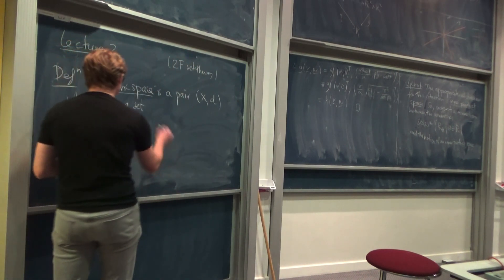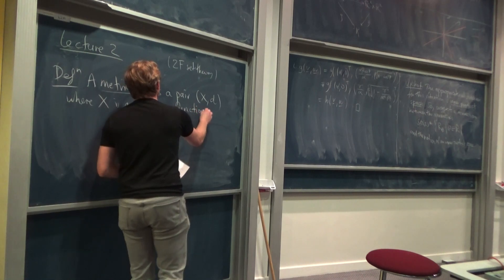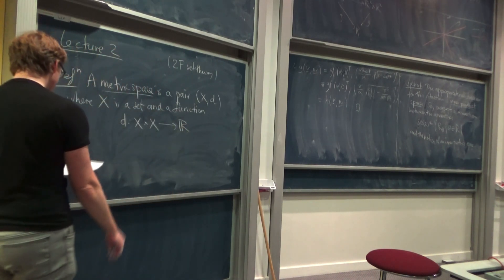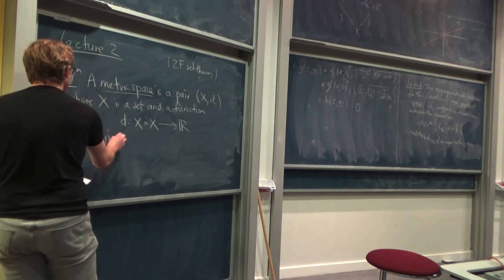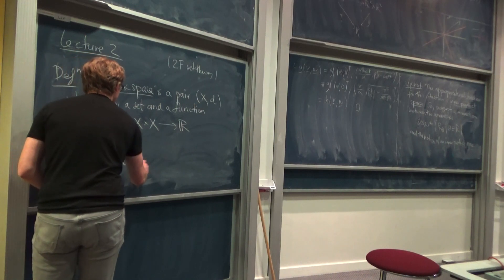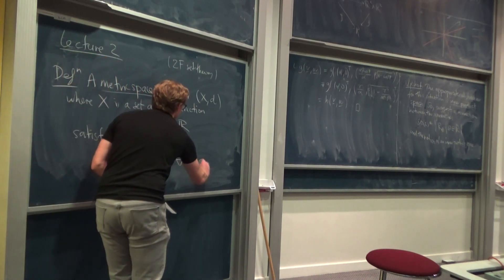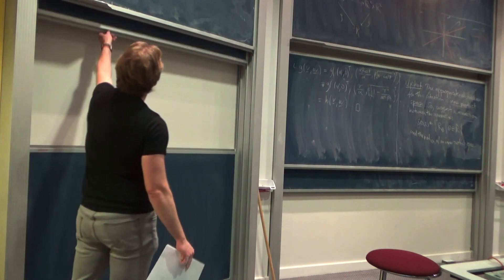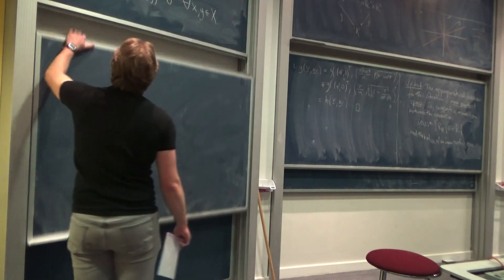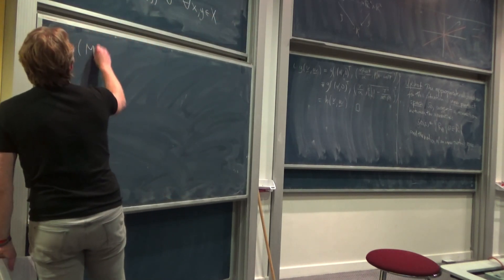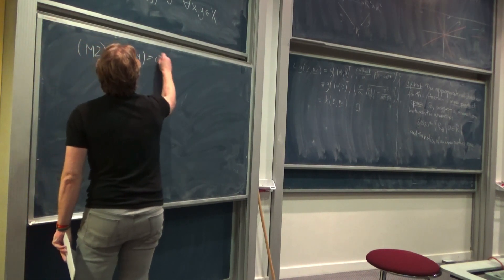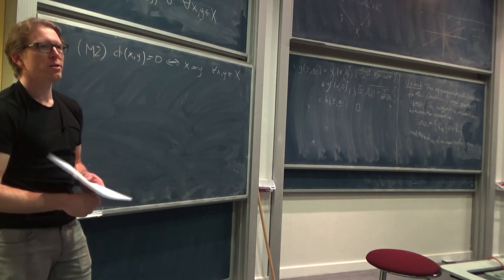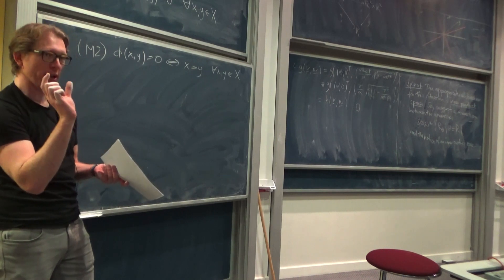Okay, so anyway. A metric space is a pair consisting of a set and a function D for distance. And then we have four axioms. Okay, so first of all, the distance is non-negative. The distance separates points.